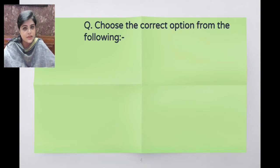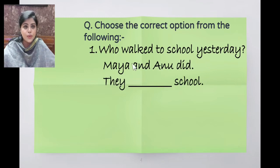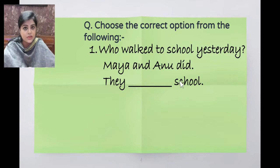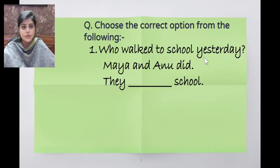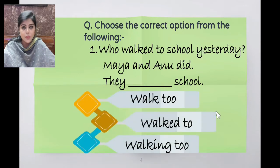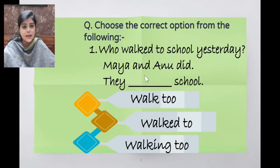First question: Who walked to school yesterday? Maya and Unnoted. They dash school. In the exam, you have to read the question twice before clicking the correct answer. Options: walk to, walked to, walking to. We are talking about past tense, so they walked to school. The answer is the second option: walked to.